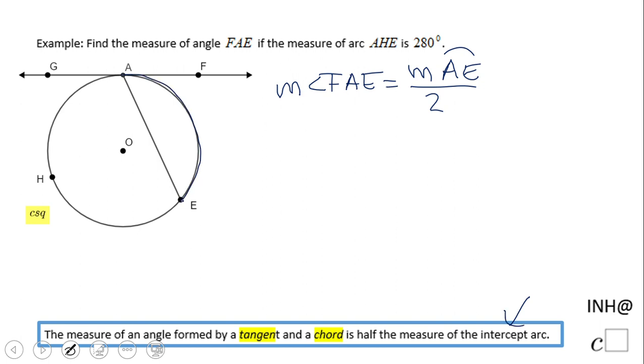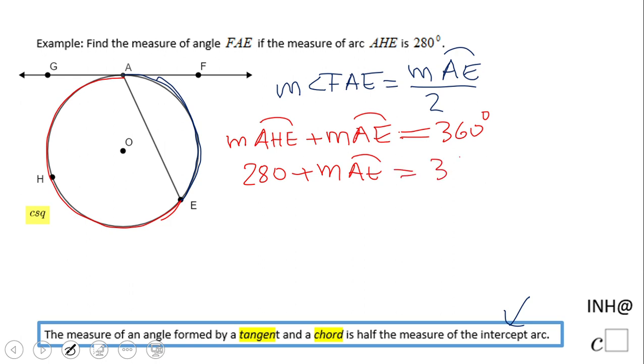We're going to look at the other given information, which is this major arc. If we add these two arcs, AHE and arc AE, we get the whole circle, which means 360 degrees. So we have 280 plus the measure of arc AE equals 360.